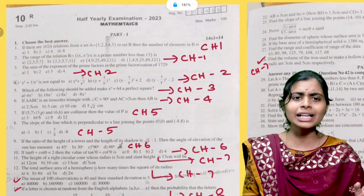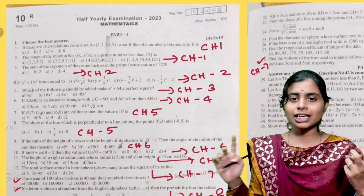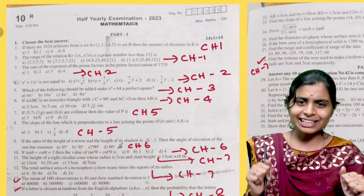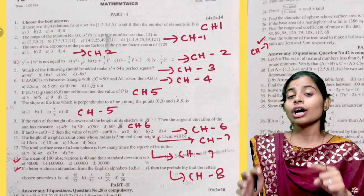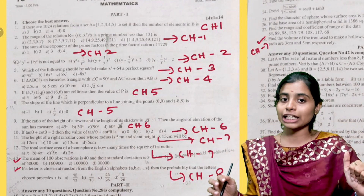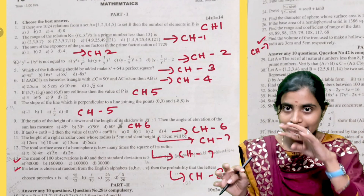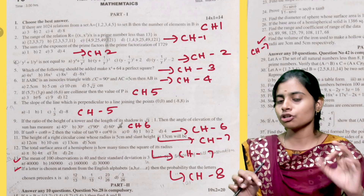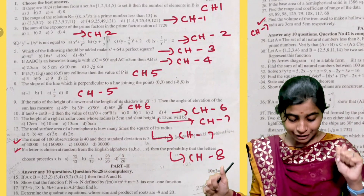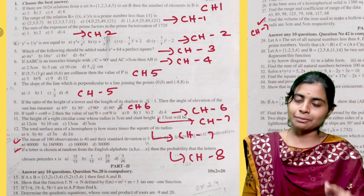As usual, there are 14 questions. One question we will guess. Chapter 1 has 2 questions. Chapter 2 has 2 questions. Most probably alternative. So don't worry. Chapter 4 and 5 have 2 questions each. We will check it out. Chapter 5 is coordinate geometry.